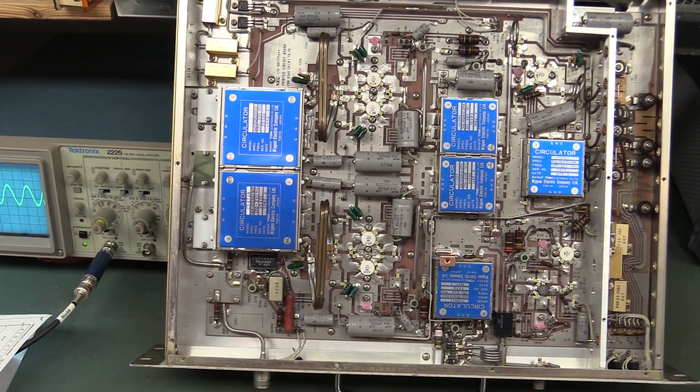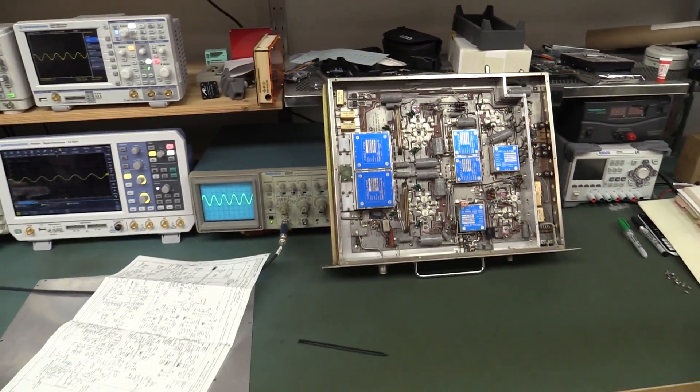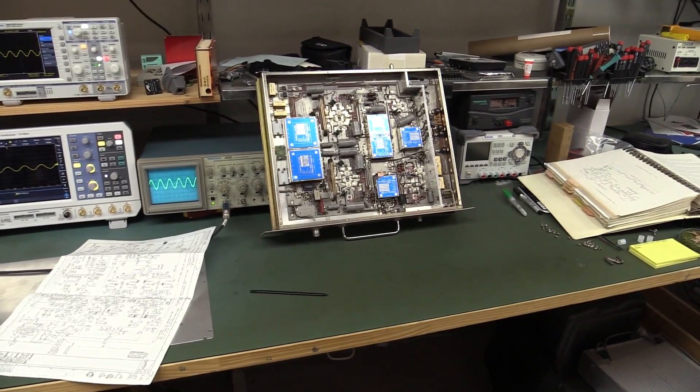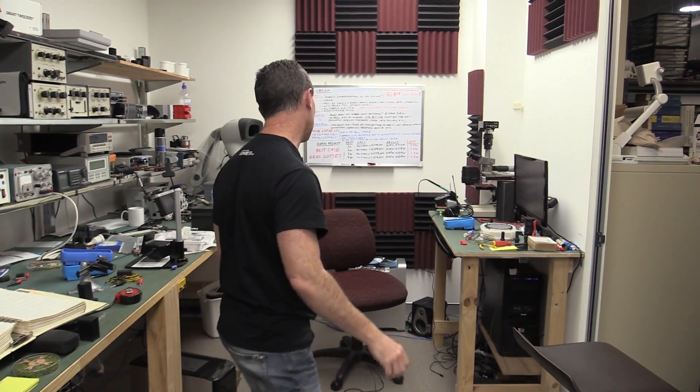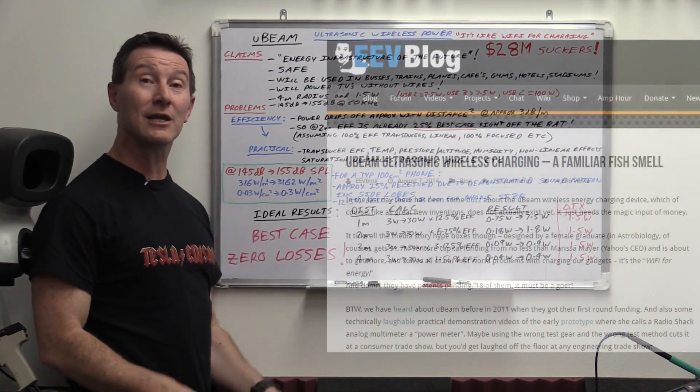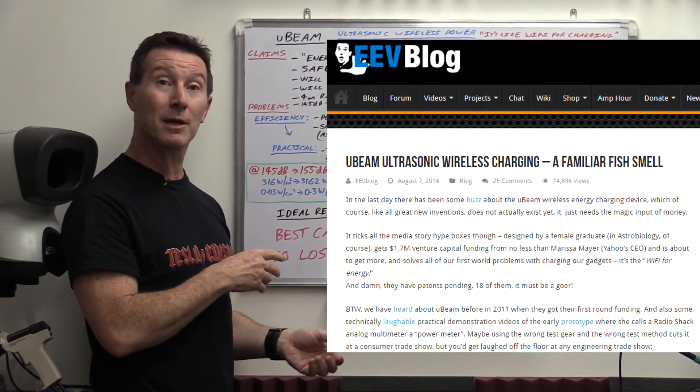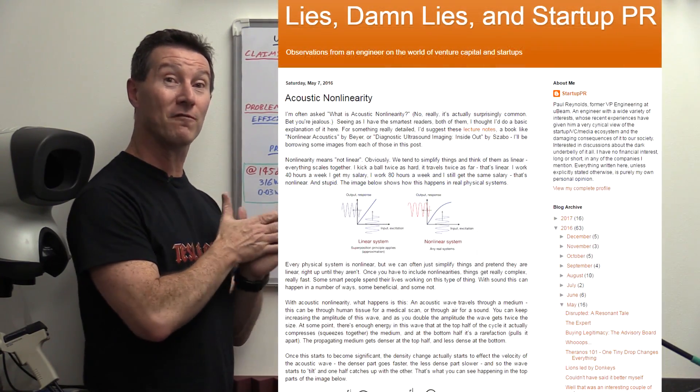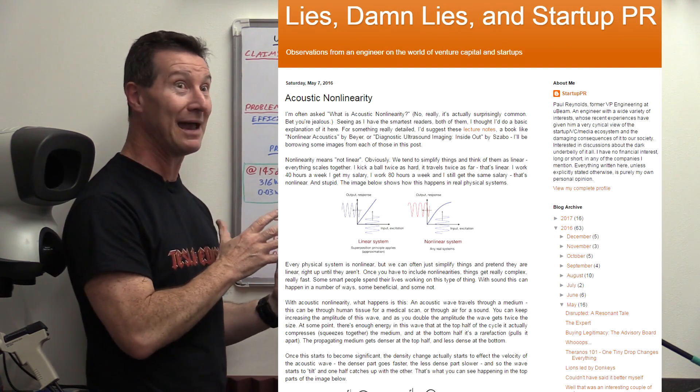One that we all like on the EEVblog is debunking. Which product is going to win the retarded product of the Century Award? There's a lot of contenders - batterizer, solar freaking roadways. But this one takes the cake. The sheer number of dollars that have been invested and just the sheer ridiculousness of the idea. The winner is, drum roll, uBeam.